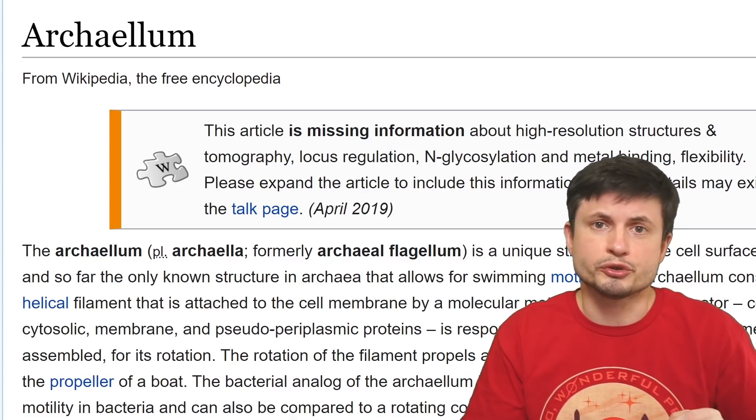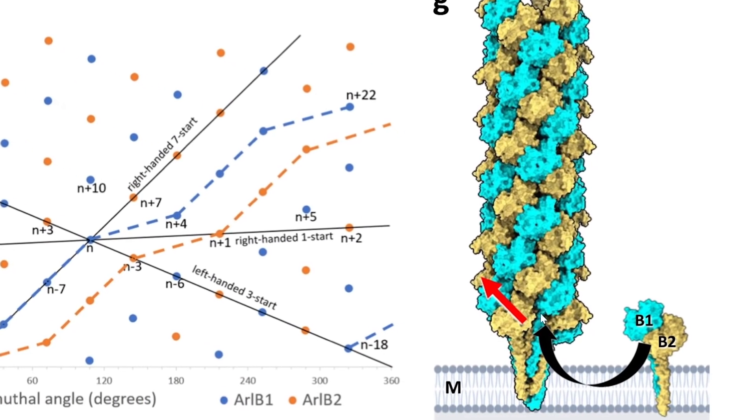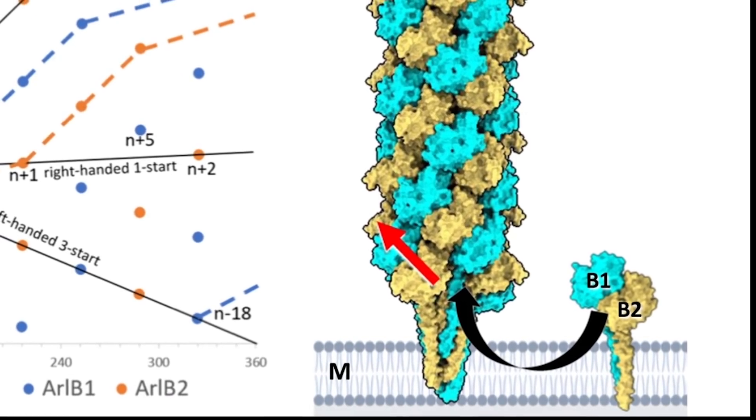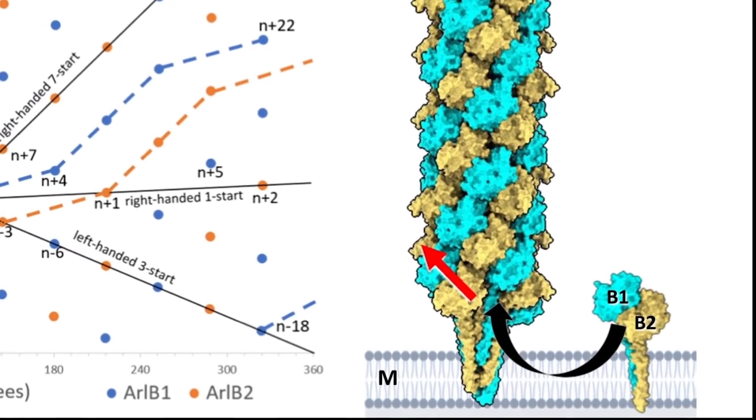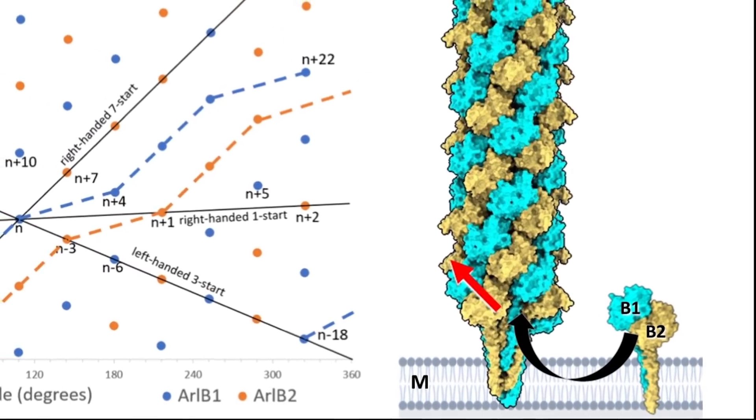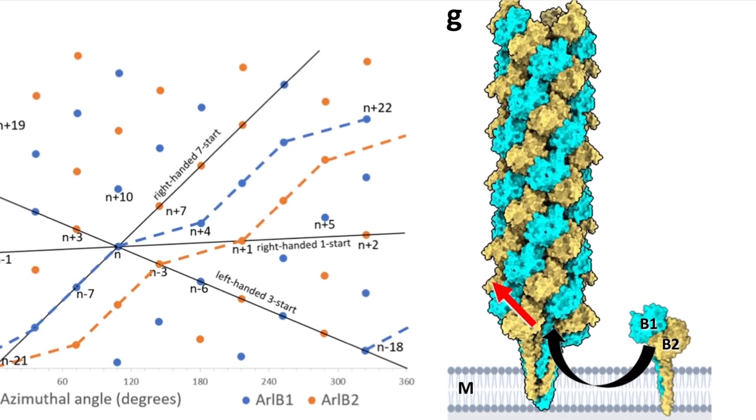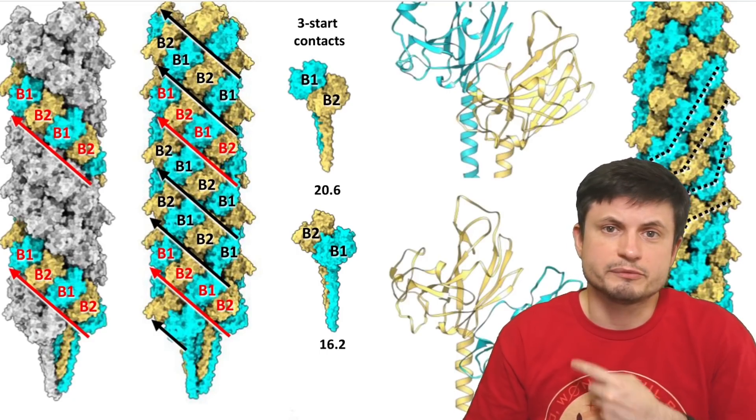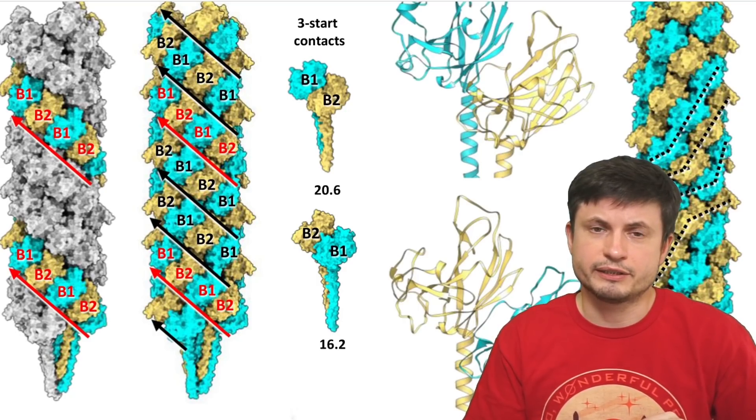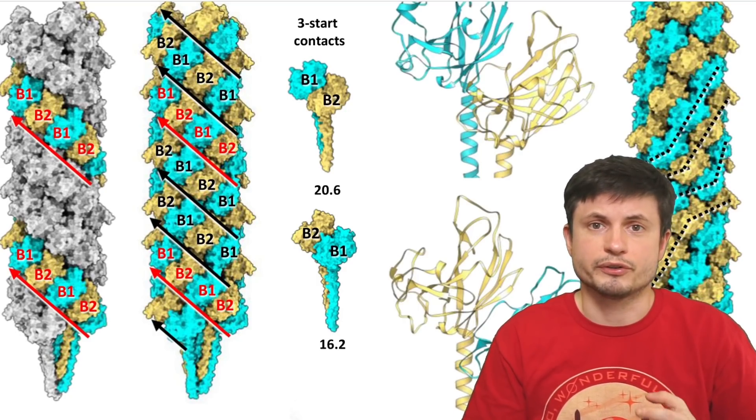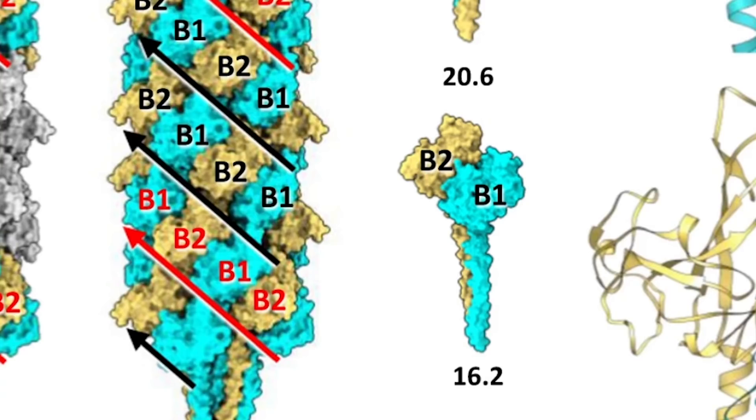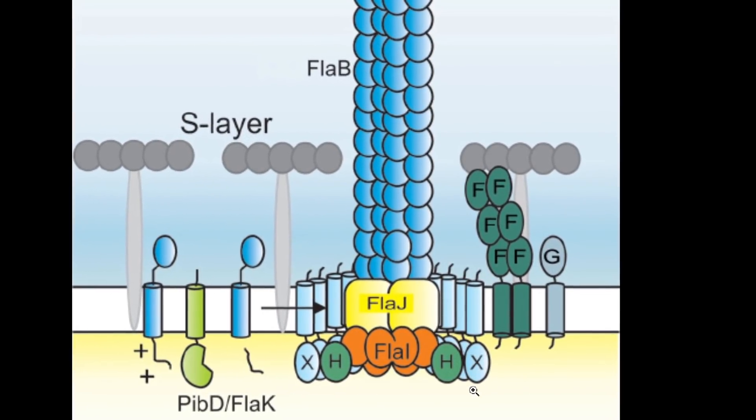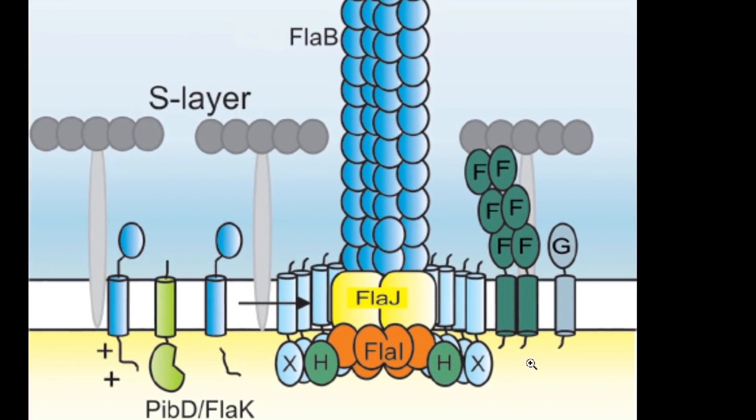It essentially spins super super fast, spinning this entire structure which then acts as a kind of a corkscrew. And to date this seems to be the only known structure for archaea or for these ancient bacteria in order to generate their motility or the ability to move. And there doesn't seem to be any other organism except for certain archaea that possess these particular structures. With a recent paper discovering that it's mostly made up of two different filaments, that you can sort of see marked as B1 and B2, that create the rotation motion with this part of the bacterium acting as a sort of a motor that spins the entire structure.